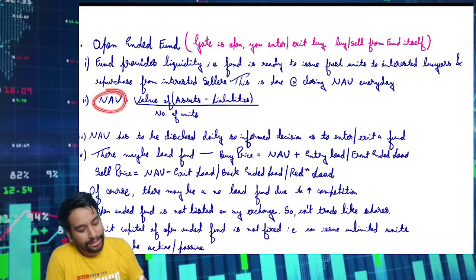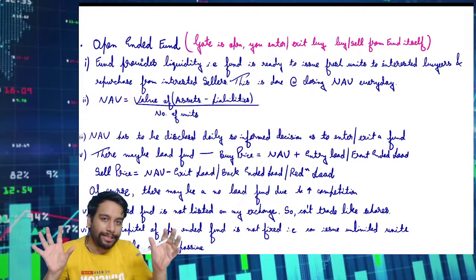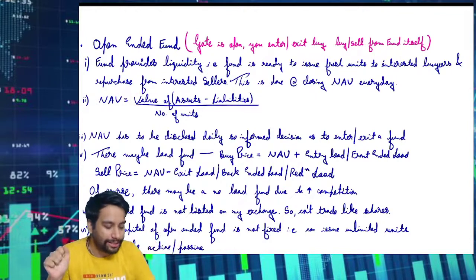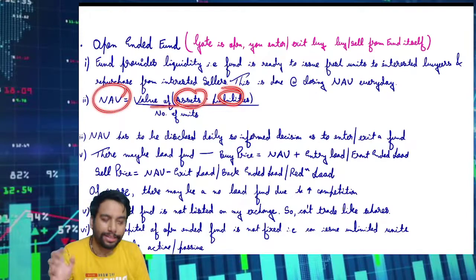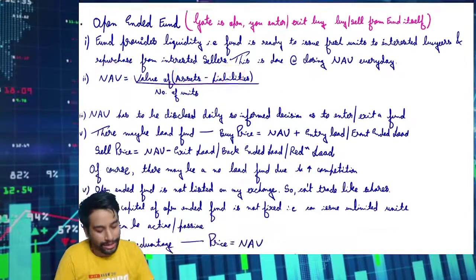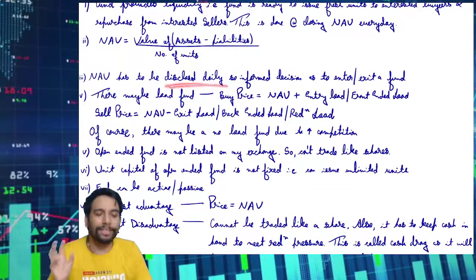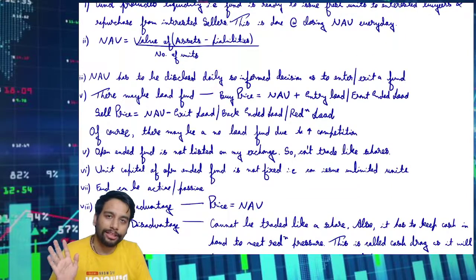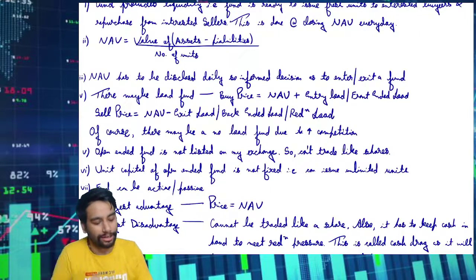How is NAV calculated? Whatever assets the fund is invested in: asset minus liability divided by number of units — that is the NAV, net asset value. NAV has to be disclosed daily so that the rate at which you want to buy or sell is transparent.